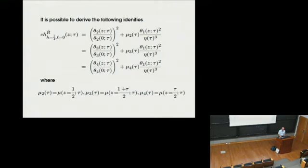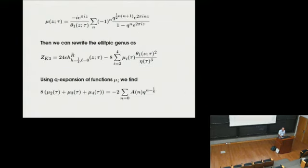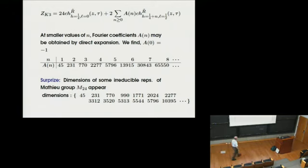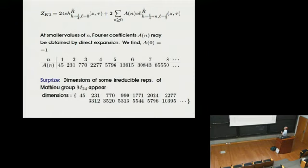Let me show you the expansion of the K3 elliptic genus in terms of these character functions of the representation theory. The elliptic genus of K3 is expanded as: first, the character of the BPS representation (with spin zero and spin one-half, h = 1/4) multiplied by 24 — the Euler number of K3. Then there is an infinite sum of non-BPS representations, where h equals 1/4 plus N, with N running over non-negative integers 0, 1, 2, and so on.